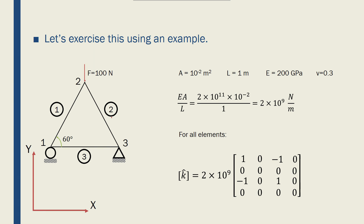Let's assume we have a three-bar truss — a very simple one. I have discretized it into three elements: element 1, element 2, and element 3, and we have three nodes: node 1, node 2, and node 3. At node 2, I have a force applied in the negative y direction of 100 newtons, and the angles between the bars are 60 degrees.